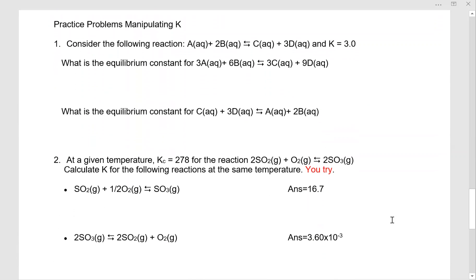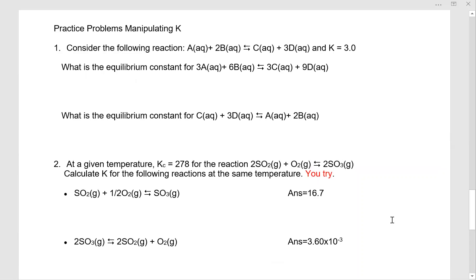We're going to apply these rules. I'm going to do the first set of practice problems. You are going to do the second set. So consider the following reaction. A plus 2B makes C plus 3D and we're told we have K of 3.0. Useful thing to know. What is the equilibrium constant for 3A plus 6B in equilibrium with 3C plus 9D?